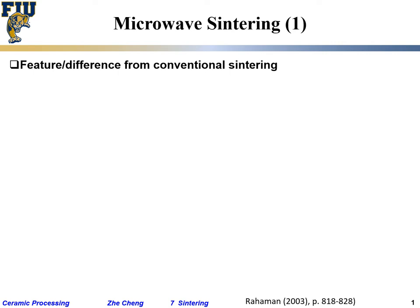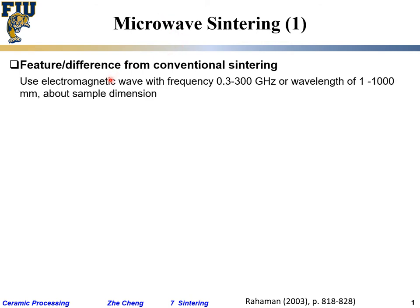Microwave sintering is one type of sintering using electromagnetic waves — microwave — which uses electromagnetic waves typically in the frequency range of 0.3 to 300 gigahertz, similar to our cell phones and microwave ovens. The wavelength ranges from one millimeter all the way to one thousand millimeters, which means the wavelength is roughly the same dimension as a typical sample, from one millimeter to three meters.